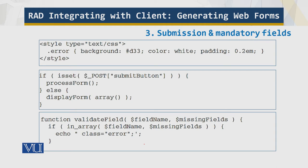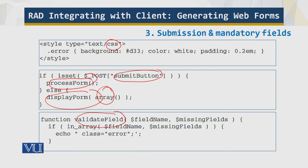The script kicks off with the standard XHTML page header and includes an additional CSS class for the red error boxes. Next, the script checks to see if the form has been submitted by looking for the existence of the submit form button, and calls a process_form function to handle the form data. The script also defines some helper functions — validate_field, which is passed a field name and a list of all required fields that were not filled. If the field name is within the list, it displays the markup for the error box.